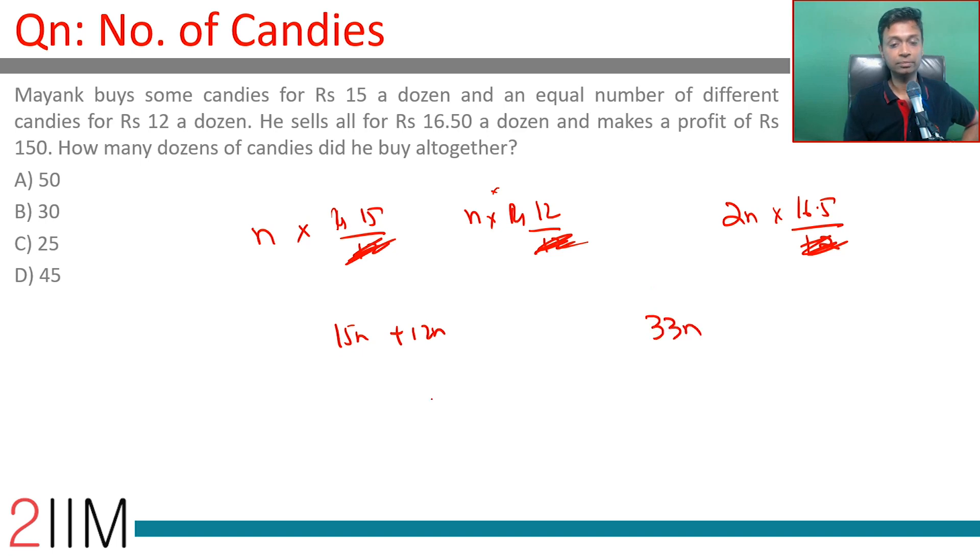This is 33n. 33n minus 27n—selling price minus cost price is profit—which is 6n, which equals 150.